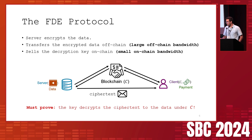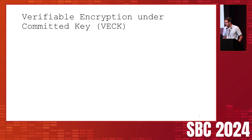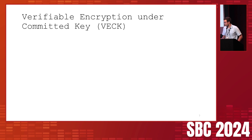To help the server prove this, we need a new cryptographic primitive we call Verifiable Encryption under Committed Key, or VEC for short. This is a variation on verifiable encryption and consists of five algorithms. We first generate public parameters — all future algorithms take these as input.